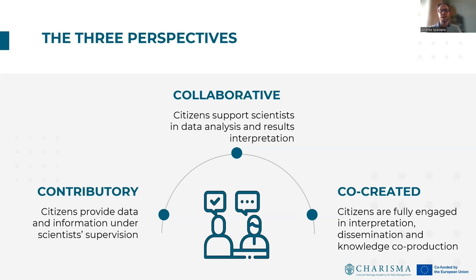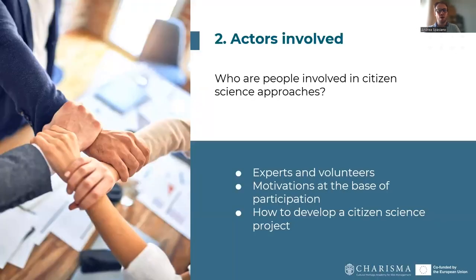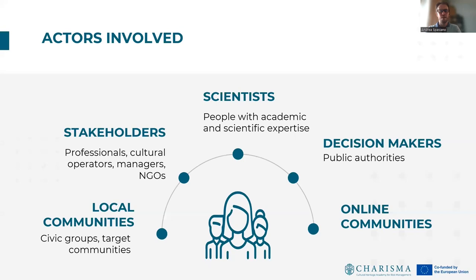Co-created citizen science can assume a transformative function when a local community leads a project. But who are the people that can be involved in a citizen science activity? Professional scientists usually coordinate and involve groups of volunteers composed by local communities such as local groups and target communities, stakeholders such as professional cultural operators, managers and NGOs, and decision-makers such as public authorities. These actors can coordinate their efforts to provide data and feedback on the application of citizen science in problem solving and solution design.